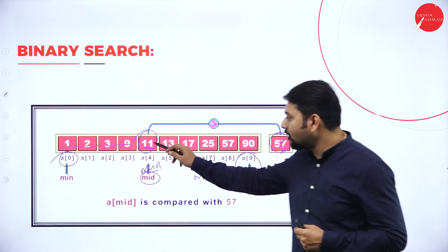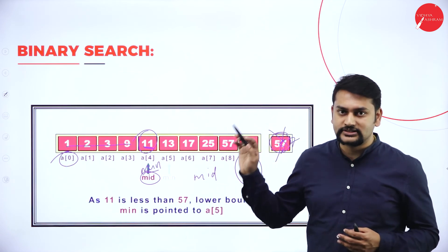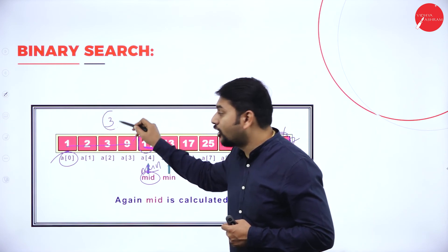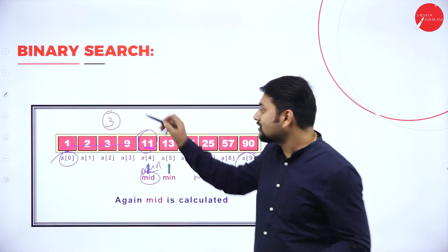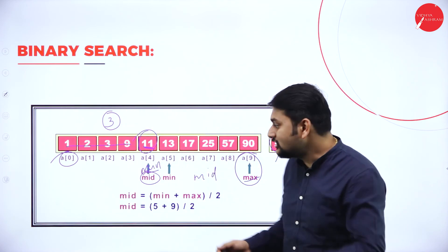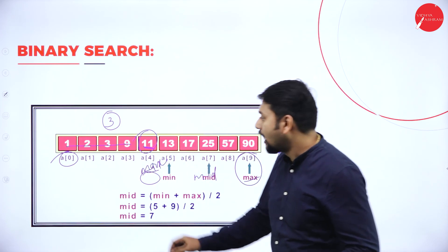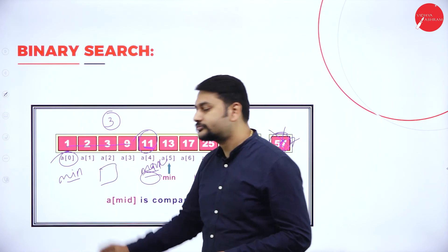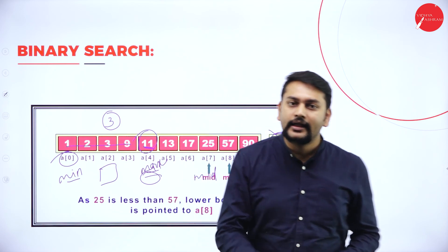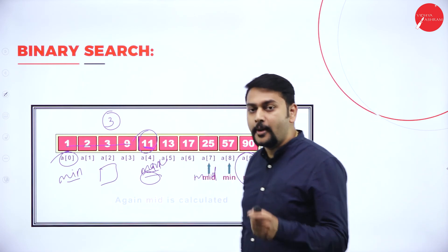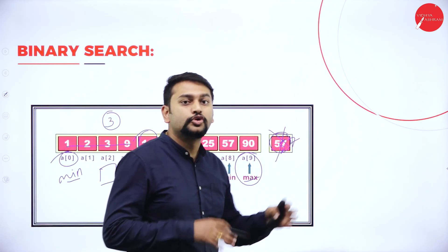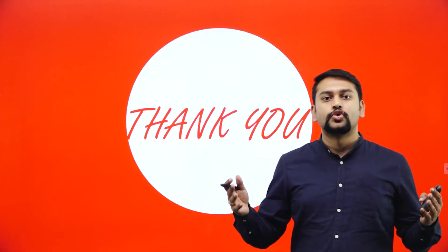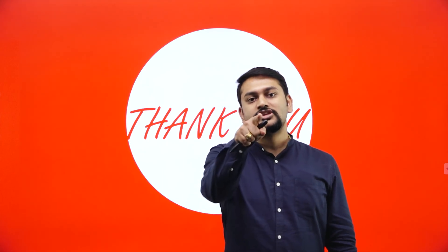Case number two: suppose I'm searching for 3 instead. I compare the mid value with the search element — here the mid value is greater than the search element. In this case, instead of making mid the new minimum, I make it the new maximum. Using the existing minimum and new maximum, I recalculate the mid value and repeat until I find my element. This is how binary search helps reduce half the search effort. With this, I have come to the end of the session — please wait for the next one. Take care, bye!